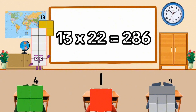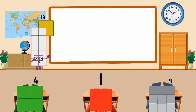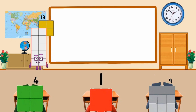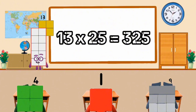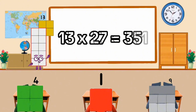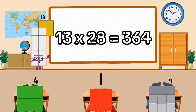13 times 22 equal 286. 13 times 23 equal 299. 13 times 24 equal 312. 13 times 25 equal 325. 13 times 26 equal 338. 13 times 27 equal 351. 13 times 28 equal 364.